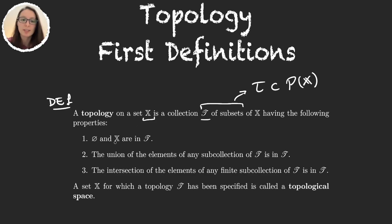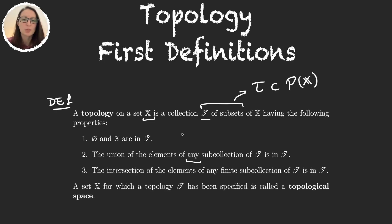The empty set and X are in that topology. The union of the elements of any subcollection of tau is in tau. What's important here is the word 'any' — we're not talking about any specific cardinality. We're not saying the union of finite elements or countable elements. Any union, whether countable or uncountable, of elements of tau is in tau.